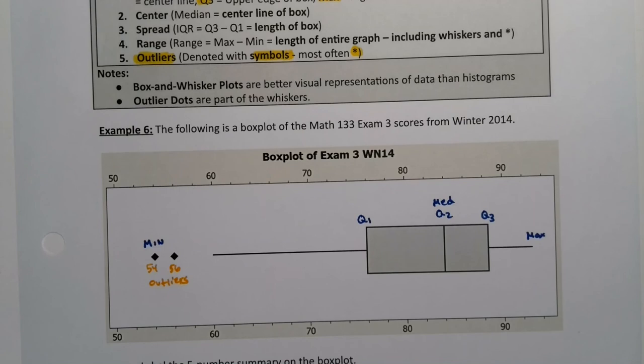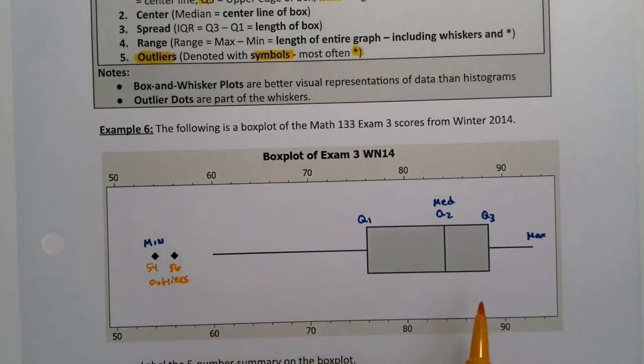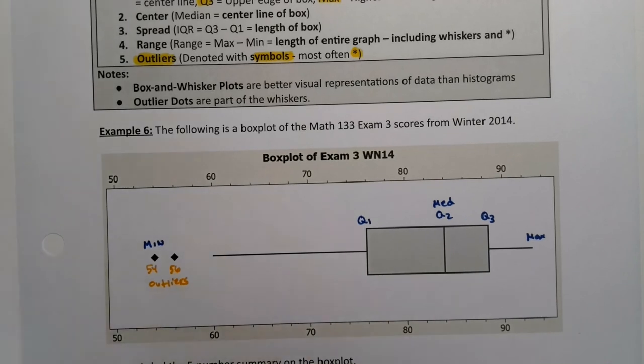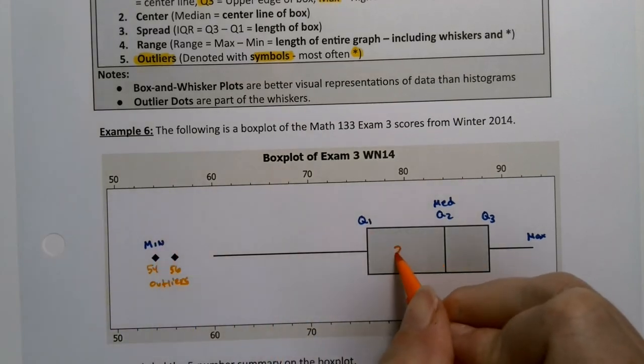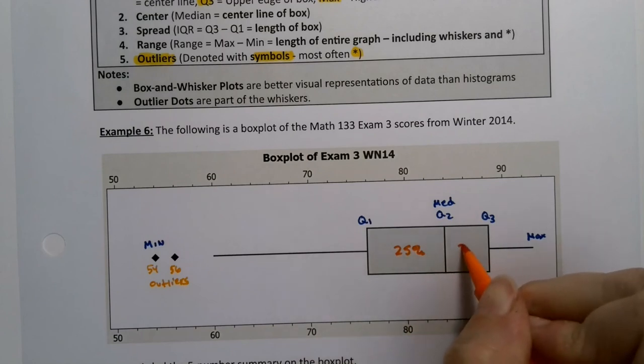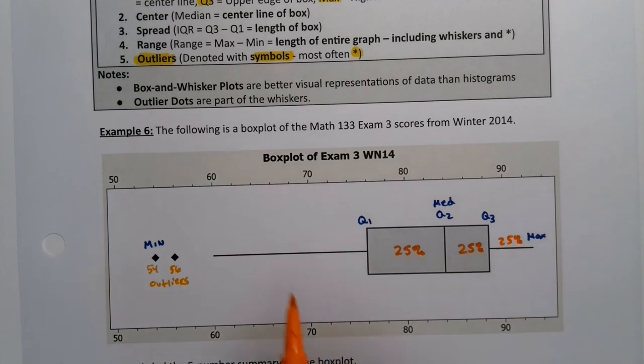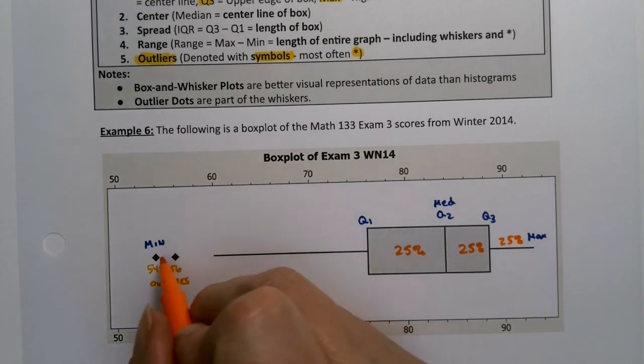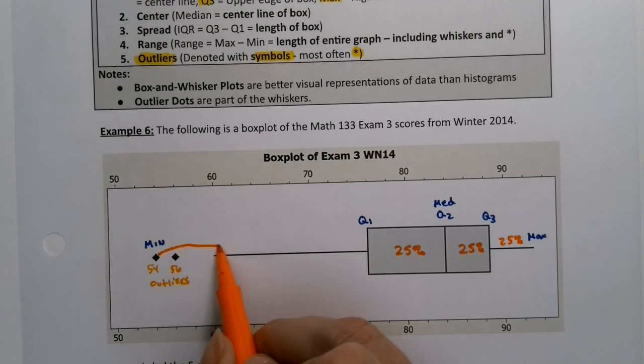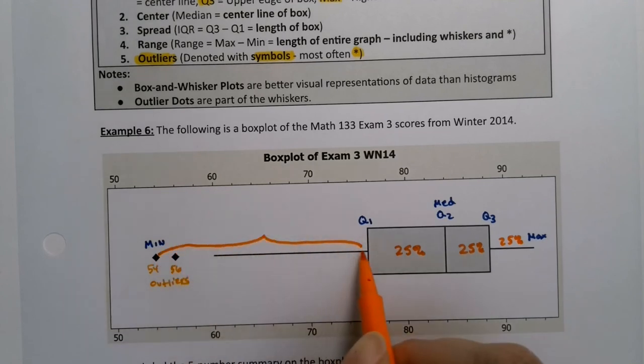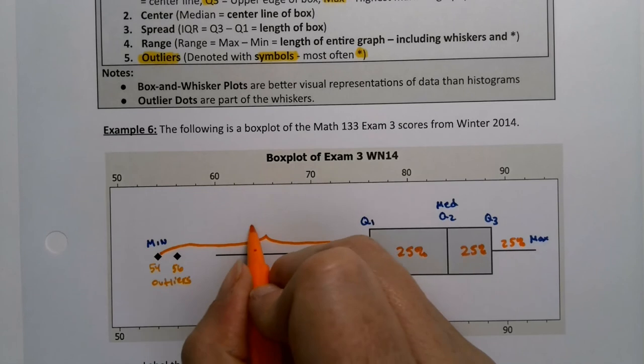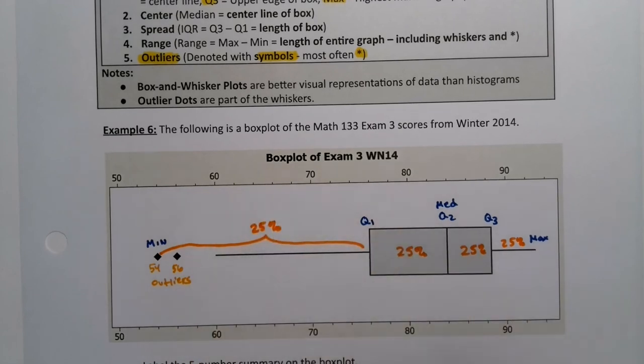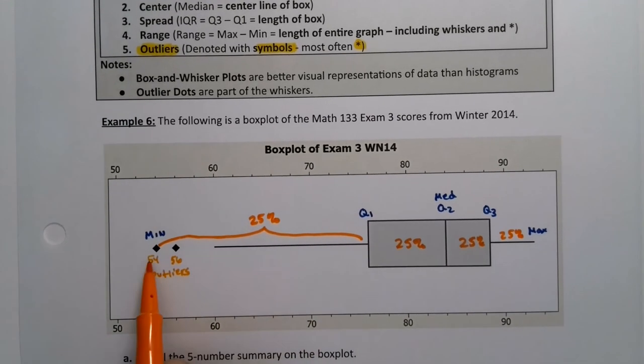All right, so let's see. We know each of these sections has 25% because we remember that from before. So this section of the box has 25%, this section of the box has 25%, this whisker has 25%. And what students sometimes think is they think it's this whisker that has 25%, but no, no—it's the whole region from the whisker all the way down to the outliers is the 25%. So don't be fooled; just because they're outlier dots, they still count as part of the 25%.